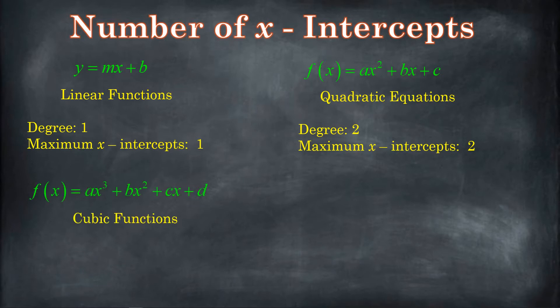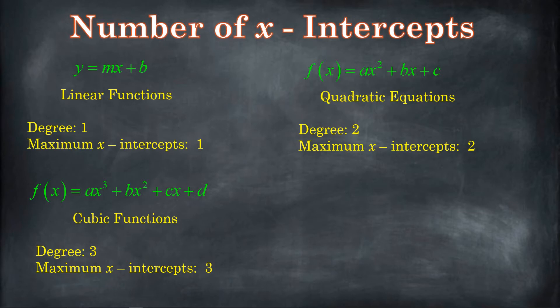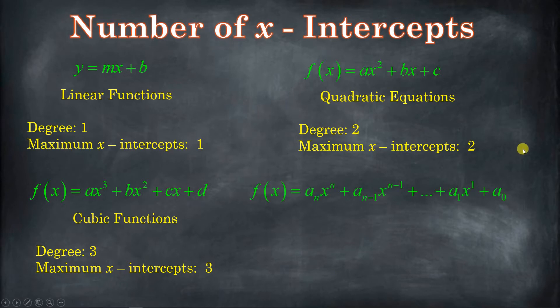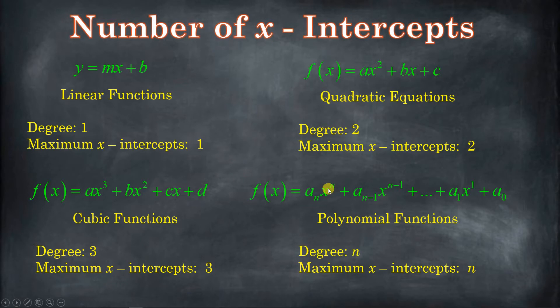With cubic functions, the degree is three, and the most x-intercepts it's going to have is three. It could have one, two, or three. Cubic functions will always have at least one x-intercept. If the degree is even, it might not have any; if it's odd, it's always going to have at least one — we'll learn more about that in the future. So if you have a polynomial function of degree n, it is going to have at most n x-intercepts. For example, if we had a polynomial whose degree was 27, it's going to have at most 27 x-intercepts.